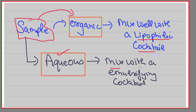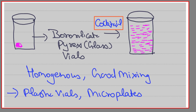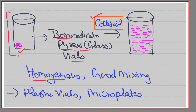In that case, your sample must be mixed using an emulsifying cocktail. The sample is mixed in a glass vial, and generally borosilicate Pyrex glass is widely used for these vials. We have to thoroughly mix the sample so that we have a homogeneous mixture.